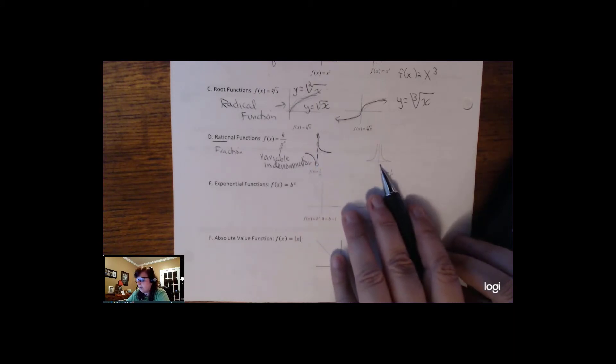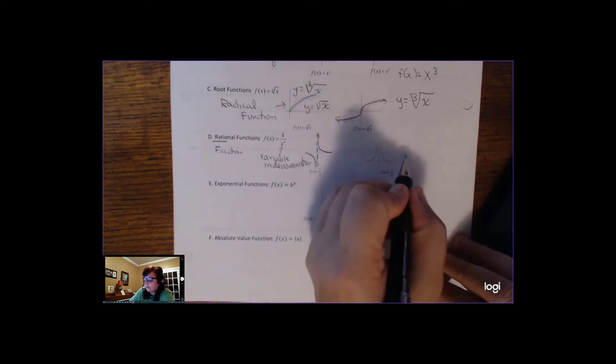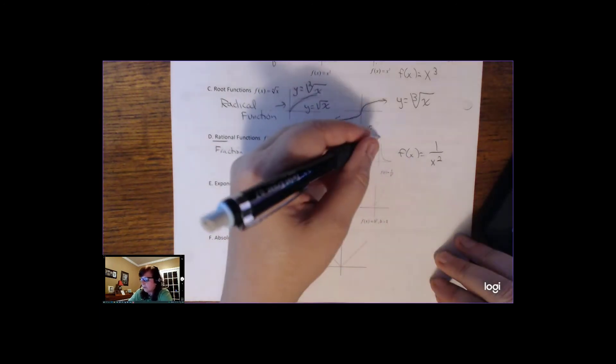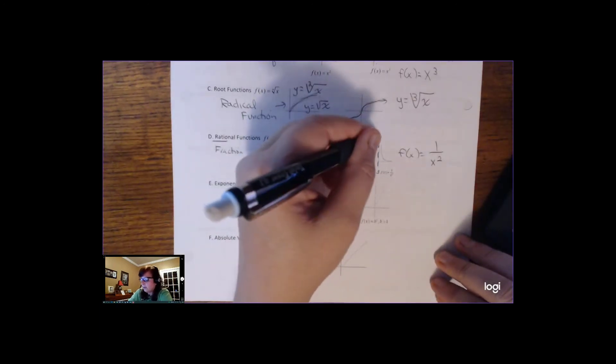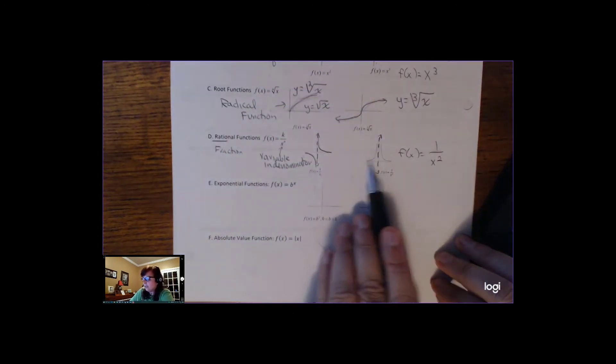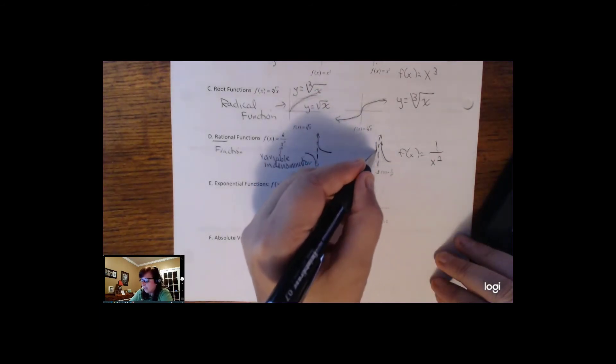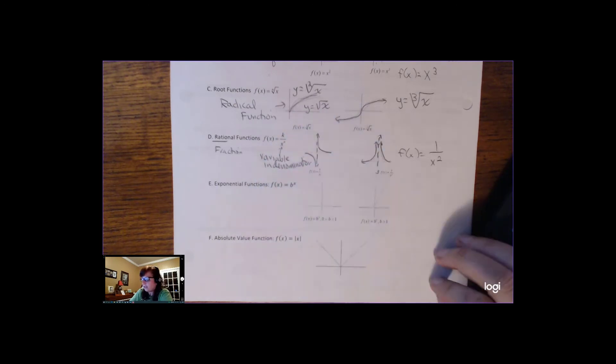So here's another one. This is hard to see, but it's f of x equals 1 over x squared. See, x can't be 0, so there's this asymptote through here. So if you see two branches that are disconnected and seem to be trying to get really close to a specific vertical line, that's a rational function.